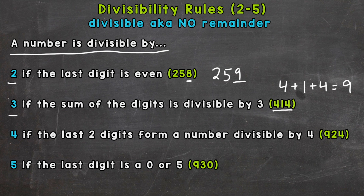A number is divisible by 4 if the last two digits form a number that is divisible by 4. So for example here, 924 — the last two digits form a 24. And 24 is divisible by 4; 24 divided by 4 is 6, and we don't end up with a remainder. So those last two digits are in fact divisible by 4, so the whole number will be divisible by 4. 924 is divisible by 4.